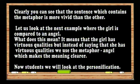Suppose we did not use the metaphor, we would have said 'the hill looks beautiful with the trees on top of it.' Clearly, you can see that the sentence which contains the metaphor is more vivid than the other. In the next example, the girl is compared to an angel. It means that the girl has virtuous qualities, but instead of saying that, we use the metaphor 'angel,' which makes the meaning clearer.